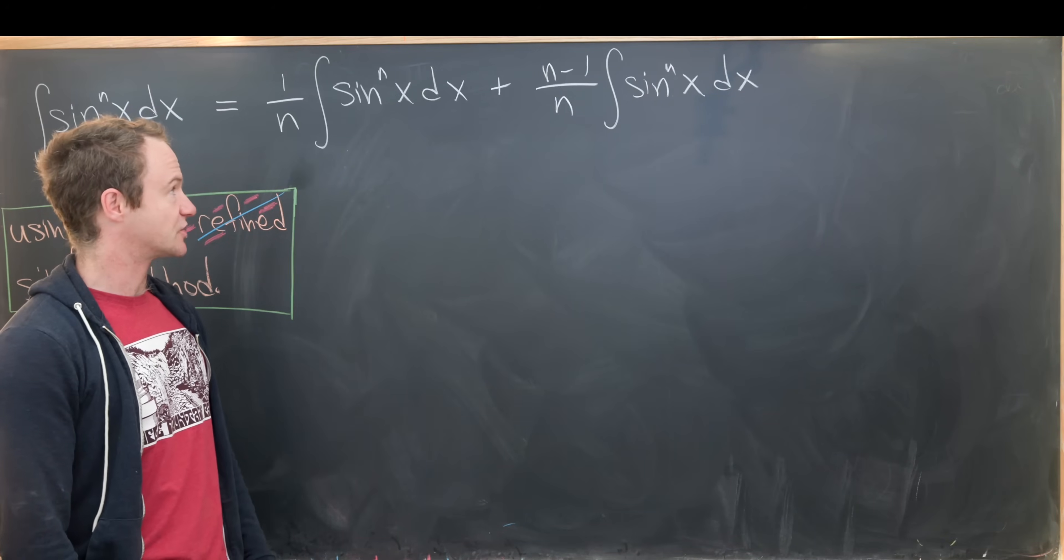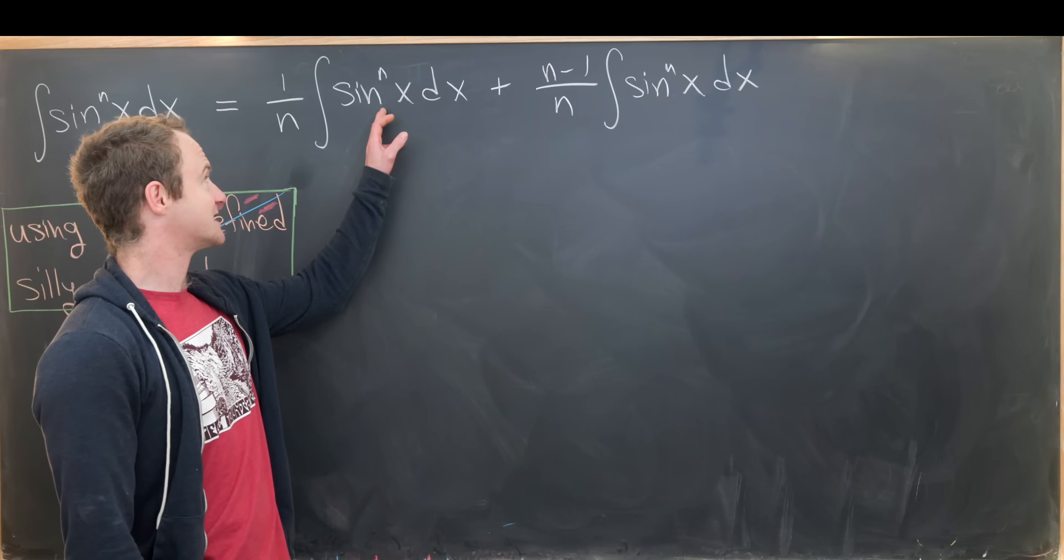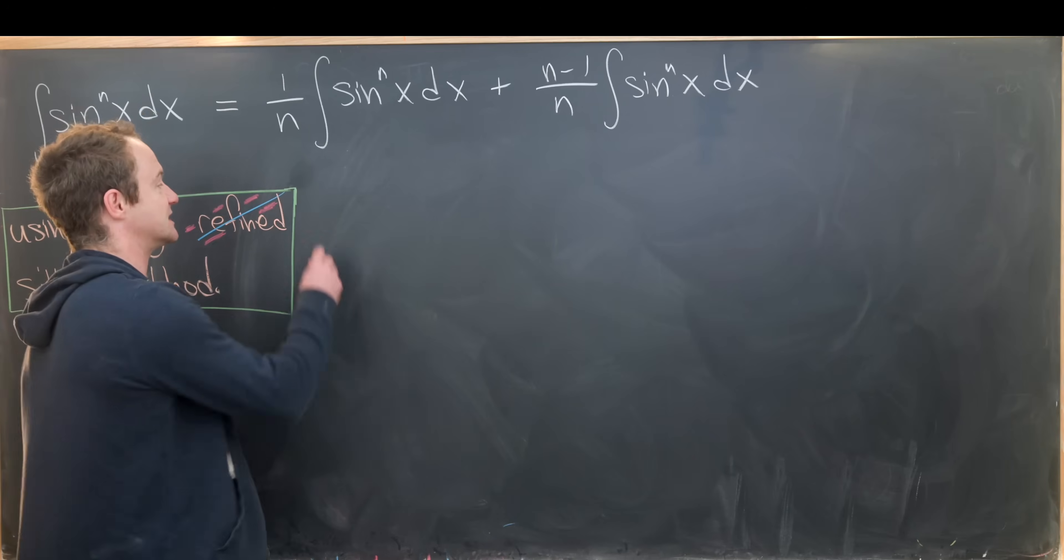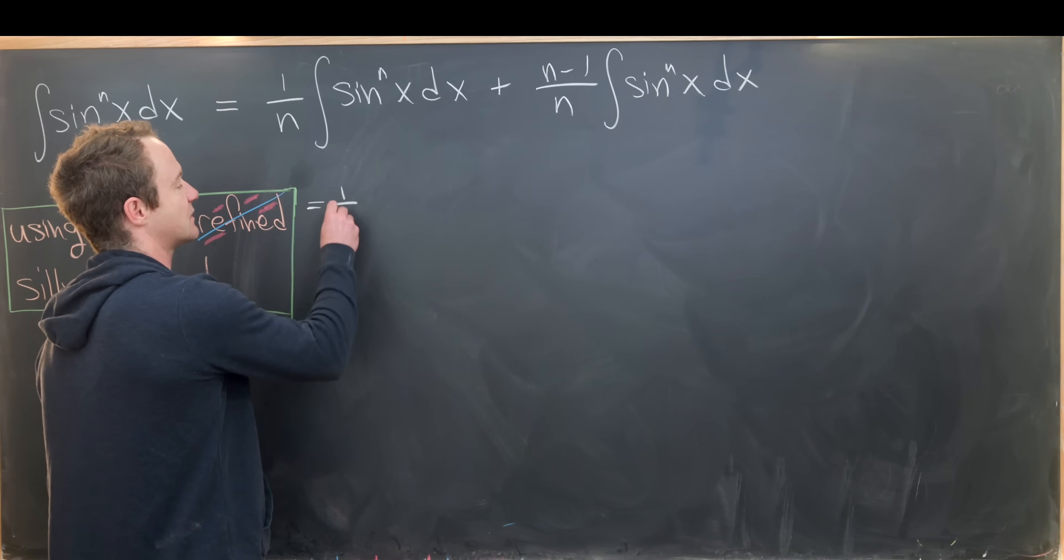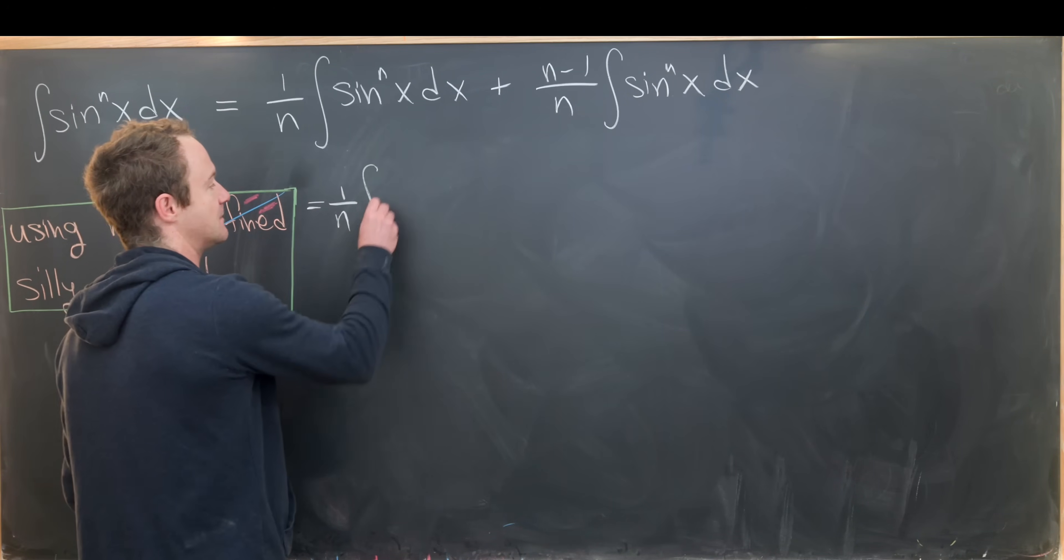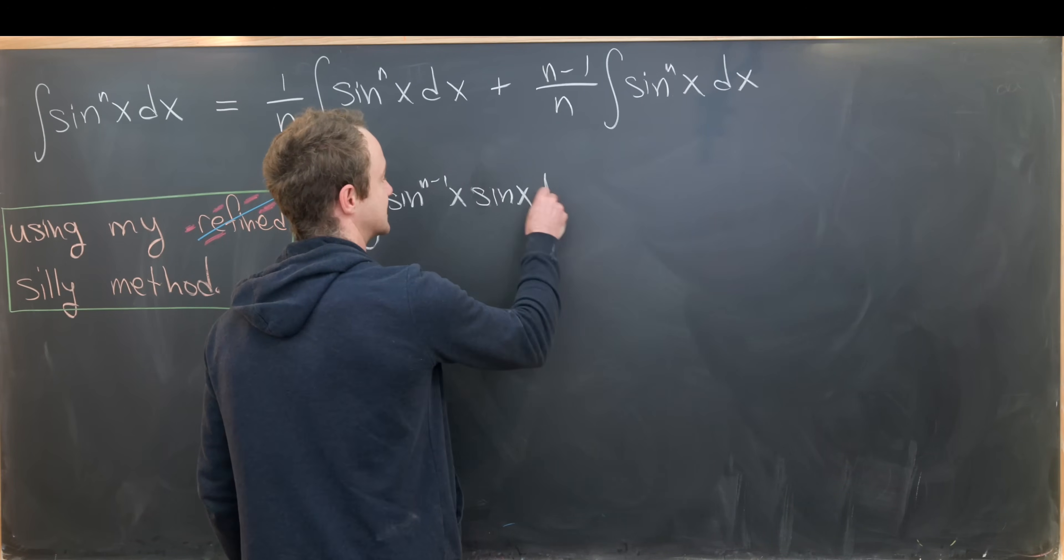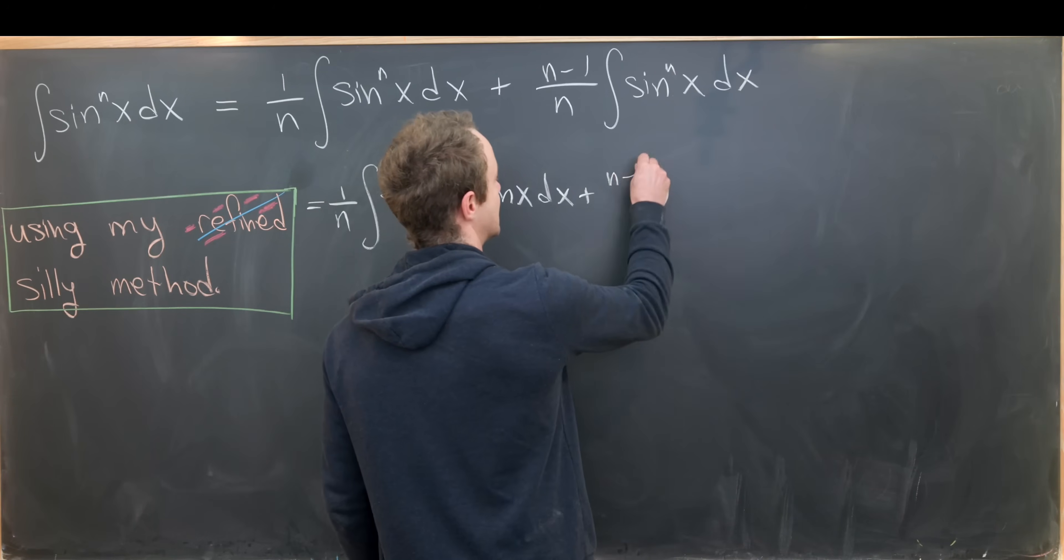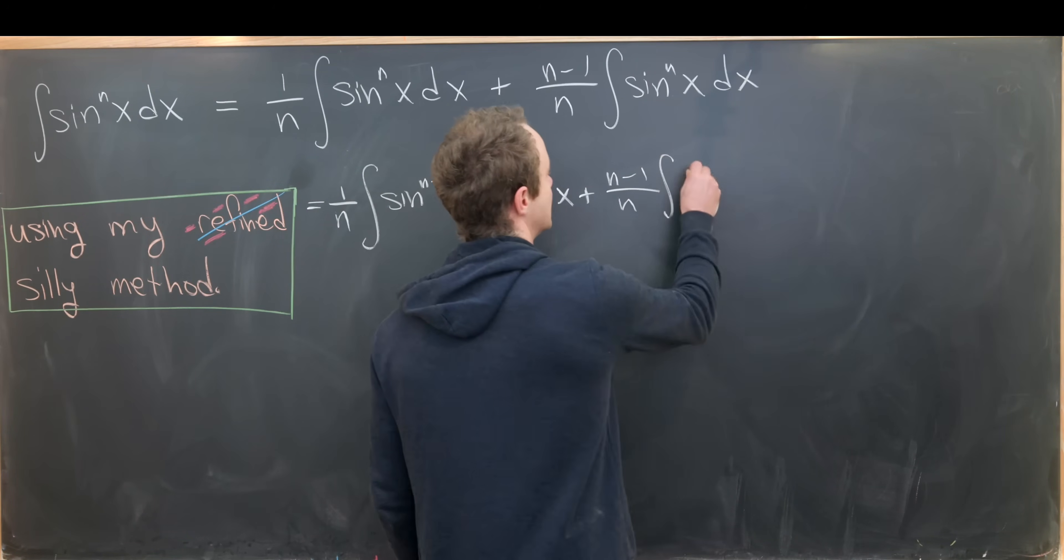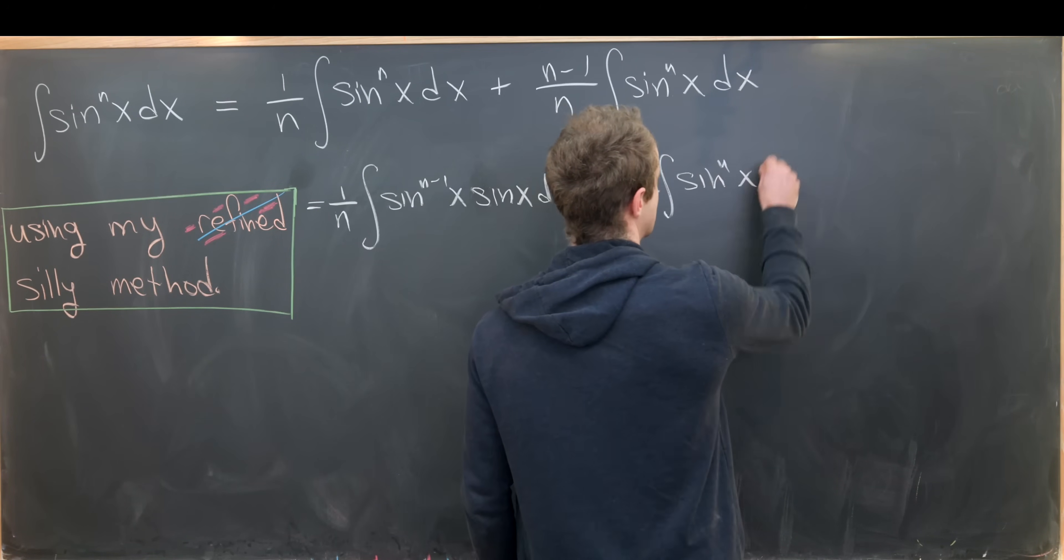And now we're going to set it up to start integration by parts. So I'll take this sine nx and split it into two pieces. So let's write it like this. We have one over n and then sine to the n minus one x times sine x dx, and then plus n minus one over n, the integral of sine to the nx dx.